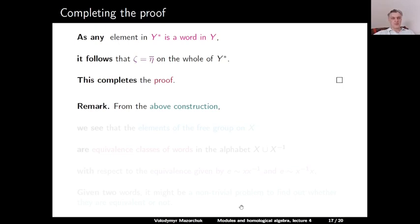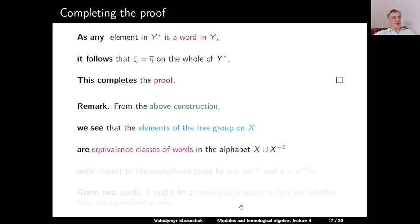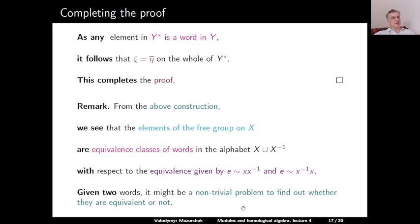To sum up: from the above construction, we see that the elements of the free group on X are equivalence classes of words, but the alphabet is not X — it is X union X⁻¹, a disjoint union of another copy of X. The equivalence classes are given by: the empty word is equivalent to x·x⁻¹, and the empty word is equivalent to x⁻¹·x for any letter x. Given two words in this alphabet, it can be a non-trivial problem to determine whether they are equivalent or not.